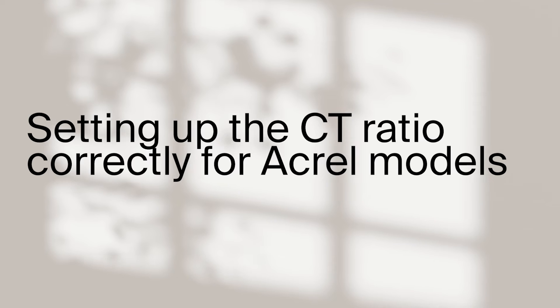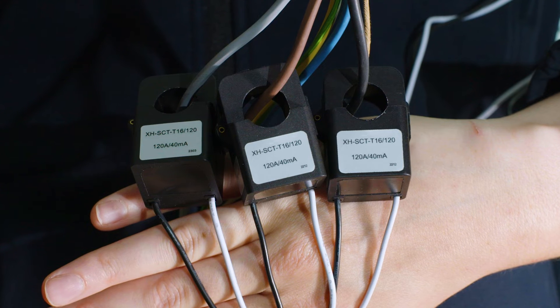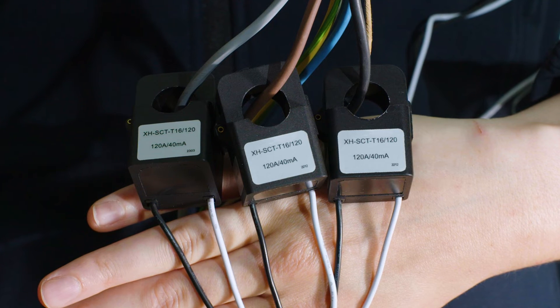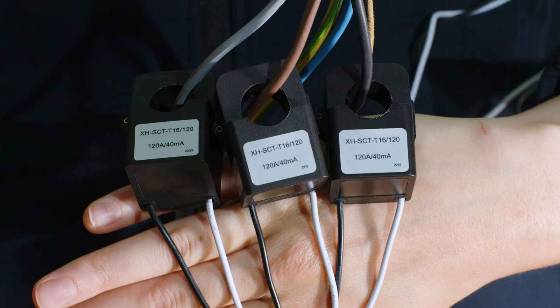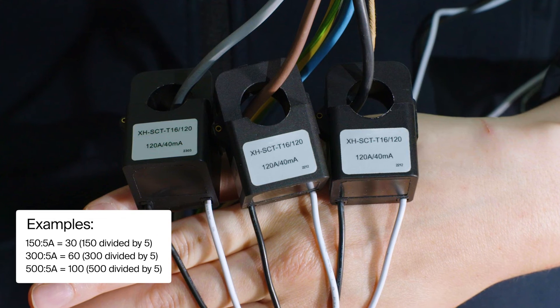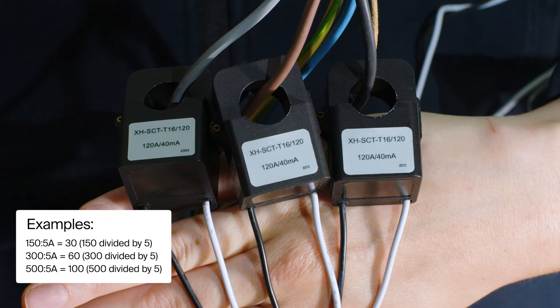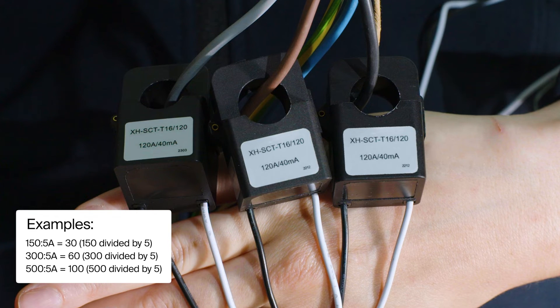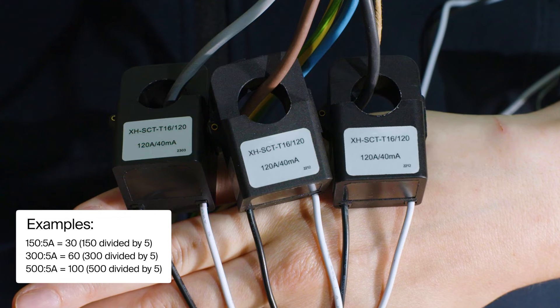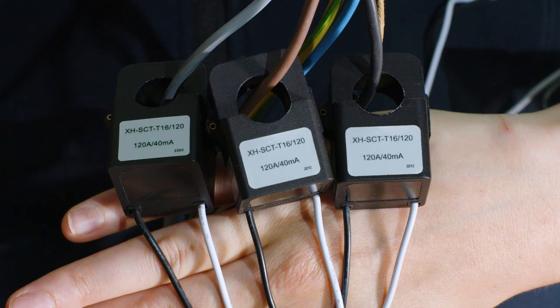Step four: Now let's make sure the CT ratio of the meter is set up correctly. This setting depends on the CT clamps you have chosen. Check the label on the clamps for the CT ratio. For example, if you have clamps with a ratio of 150 to 5 amps, you'll need to set the ratio to 30 (or 150 divided by 5). For clamps with a ratio of 300 to 5 amps, set the ratio to 60 (or 300 divided by 5). Here's how you can do it.